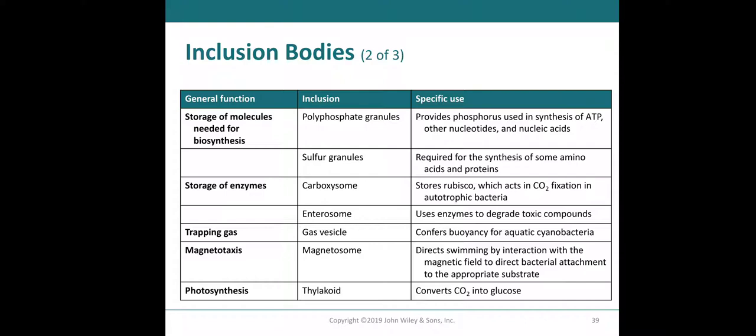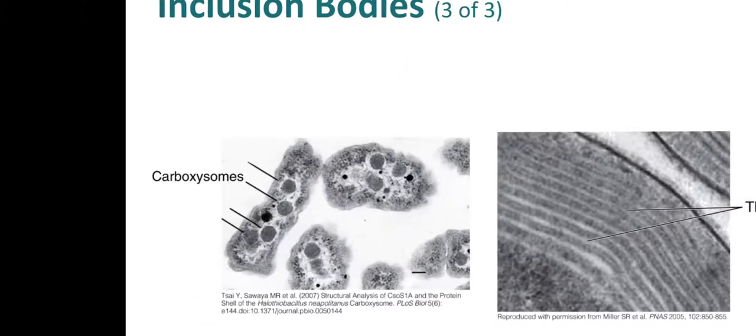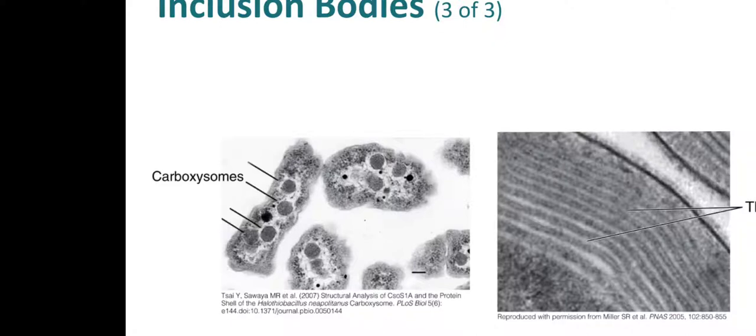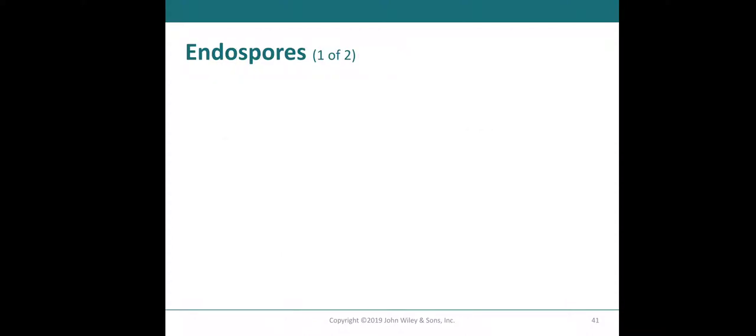Inclusion bodies can also be used to trap gas to confer buoyancy to your bacteria, especially seen in bacteria that live in aquatic environments, where they want to be always near the surface because that's where the light is. Then, you have magnetotaxis in some magnetically sensitive bacteria. Some are for photosynthetic use, such as the thylakoid. Here are some examples of the inclusion bodies. These are carboxysomes on the left and thylakoids on the right. These are transmission electron microscope images.